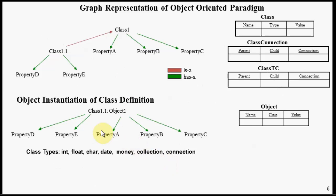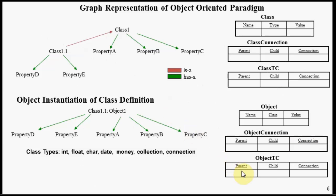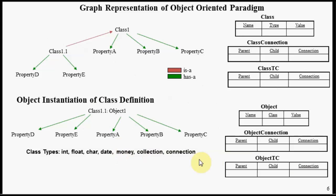Let's look at the tables needed to support our object graph. We have a table called Object, representing the nodes of our object graph — basically a name-value pair with a class column representing the kind of class being instantiated, including the class properties. We also have an object connection table representing the connections of the object graph, so it's a parent-child pair with connection type. And we have a transitive closure table associated with our object graph, maintained automatically whenever nodes or connections are added or deleted.